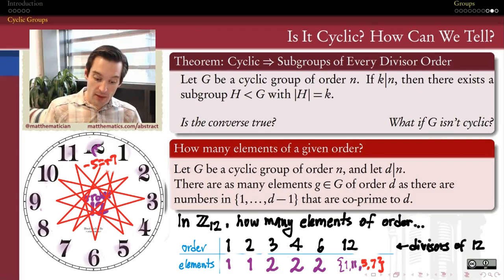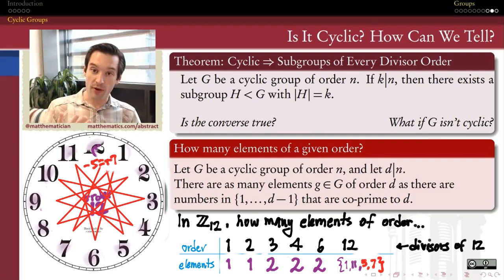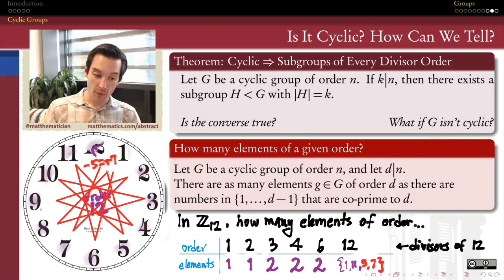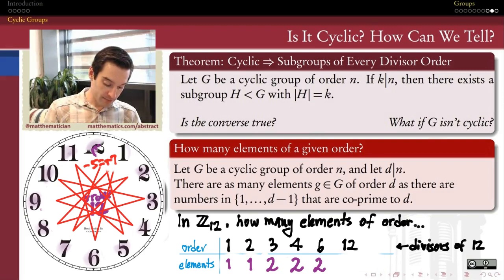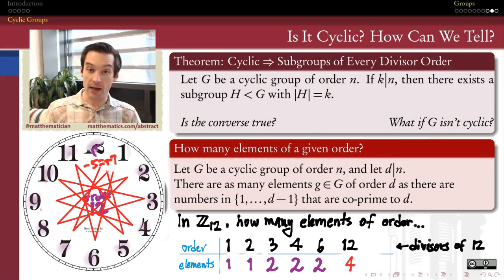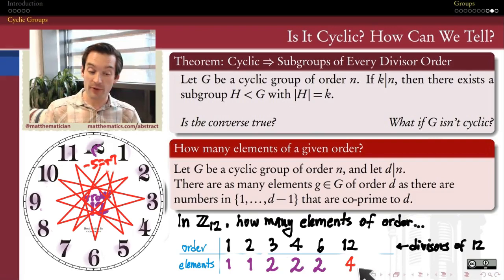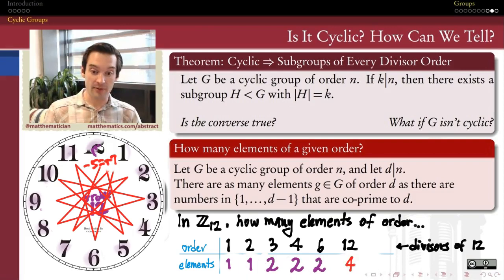Adding 7 in Z mod 12 is the same as subtracting 5. So doing that same trip around the clock in the other direction is the same as adding 7 repeatedly, and it also takes 12 steps to get back to the identity. So there are as many elements of order 12 in Z mod 12 as there are numbers co-prime to 12 that are less than 12 — all four of them: 1, 11, 5, and 7. And having gone through all these orders, we've now accounted for all the elements in Z mod 12.